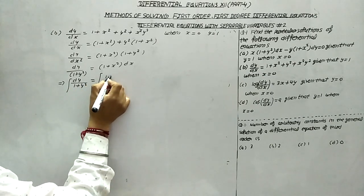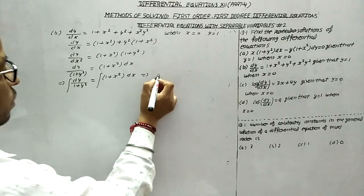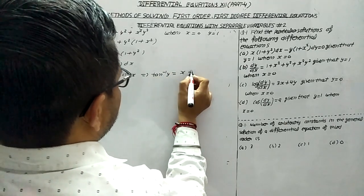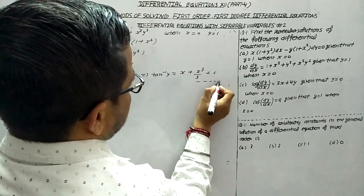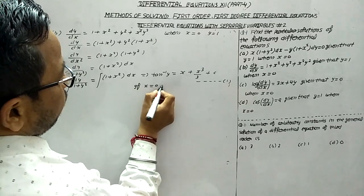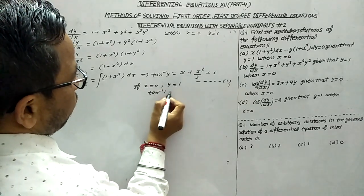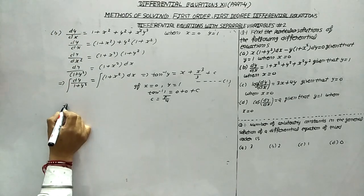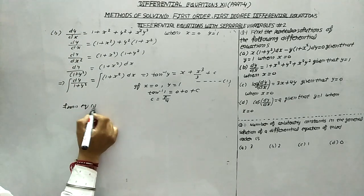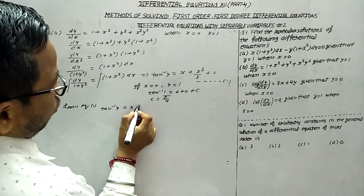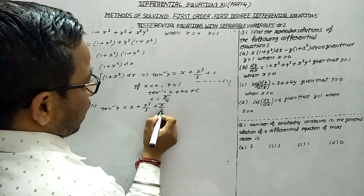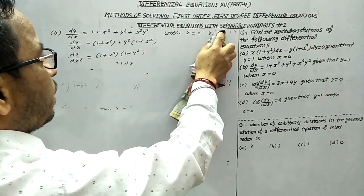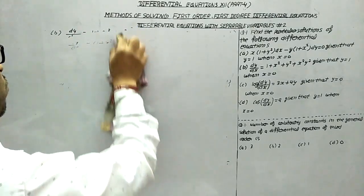Integrating both sides: ∫ dy/(1 + y²) = ∫(1 + x²) dx, which gives tan⁻¹(y) = x + x³/3 + c. This is equation 1. Substituting x = 0, y = 1: tan⁻¹(1) = 0 + 0 + c, so c = π/4. Therefore the particular solution is tan⁻¹(y) = x + x³/3 + π/4.